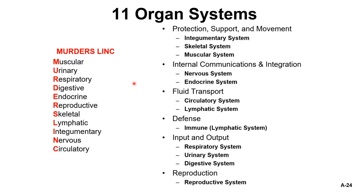A great way to remember the different systems is the mnemonic MURDERS LINK: Muscular, Urinary, Respiratory, Digestive, Endocrine, Reproductive, Skeletal, Lymphatic, Integumentary, Nervous, and Circulatory.